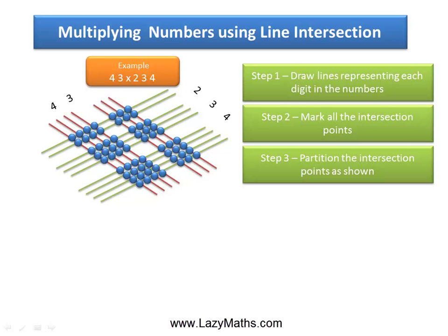The next step is to partition the intersection points into groups. We have one group on the far right, another group near the right side, then a group left of the central line, and a group on the far left — a total of 4 groups.